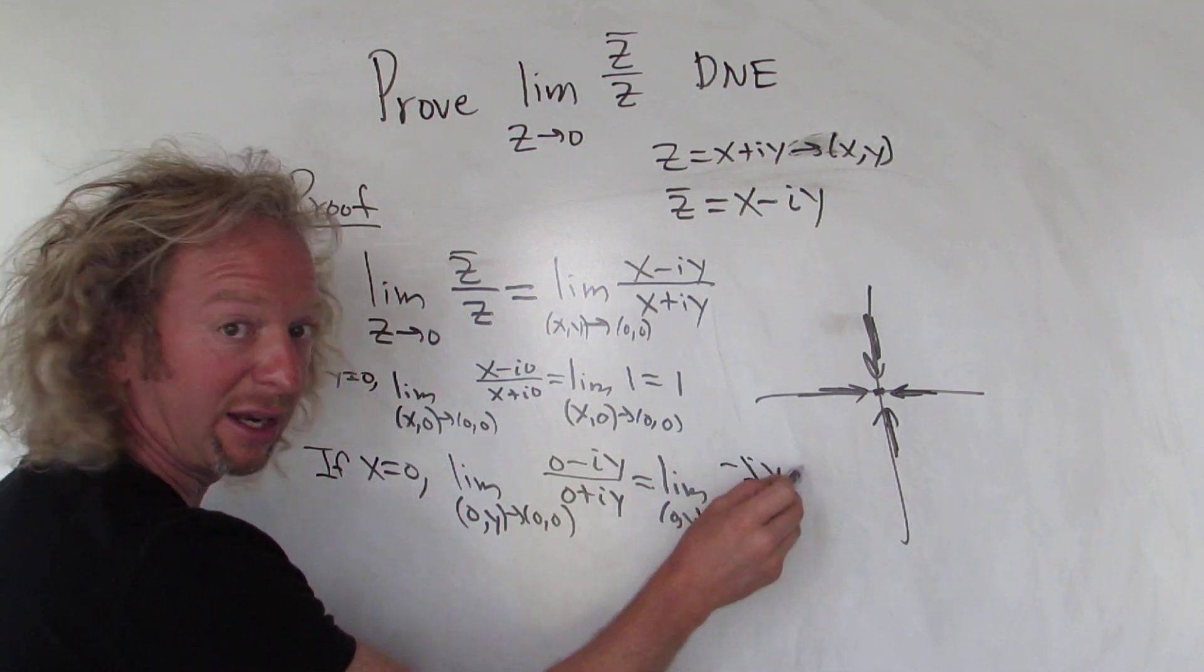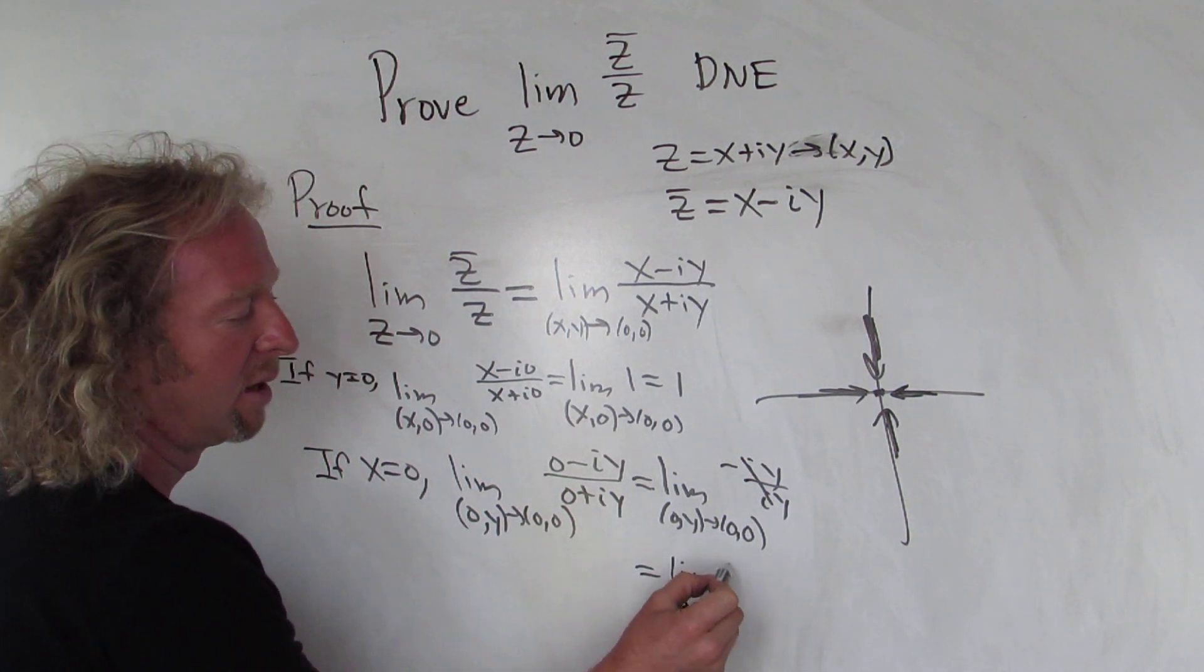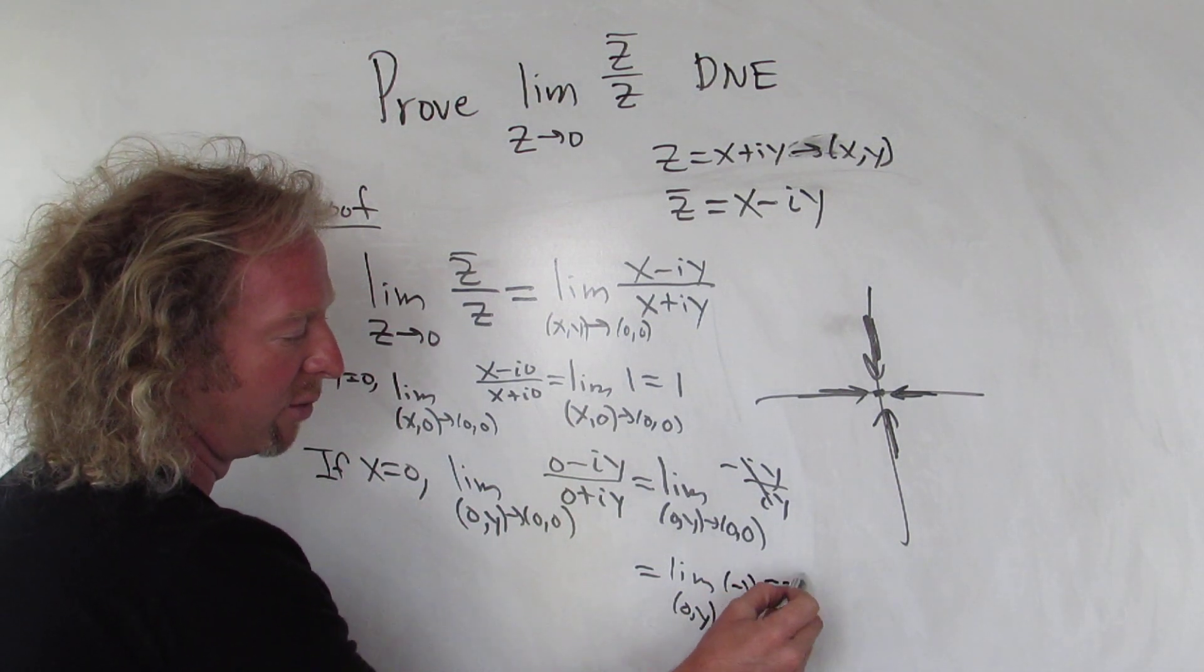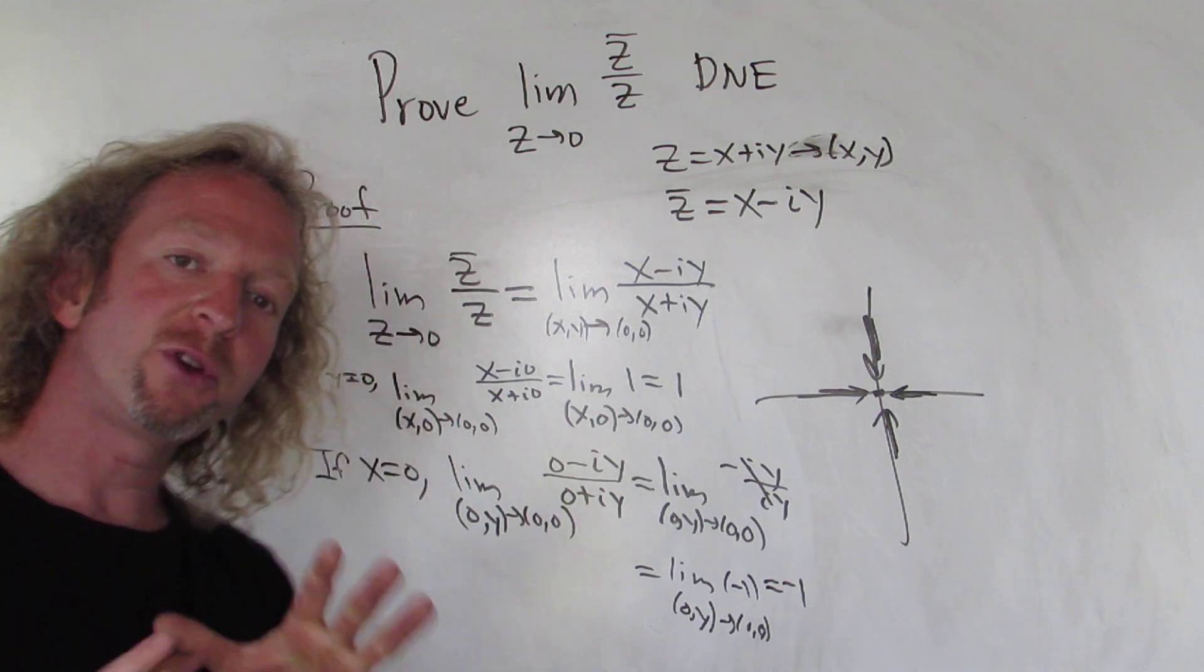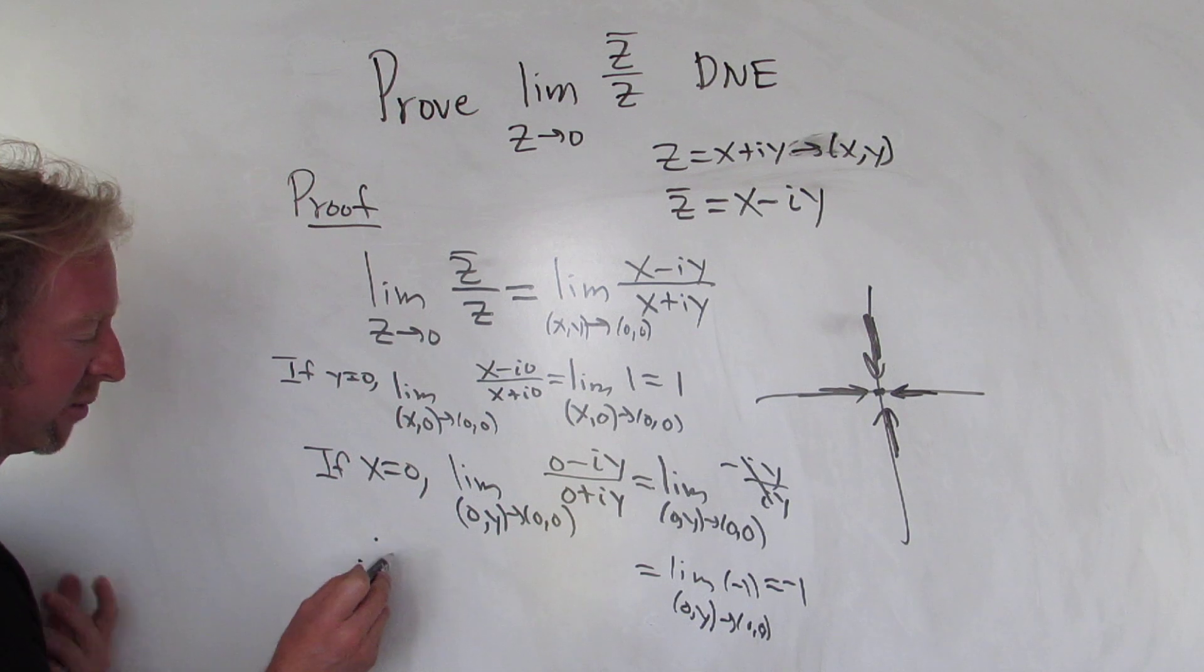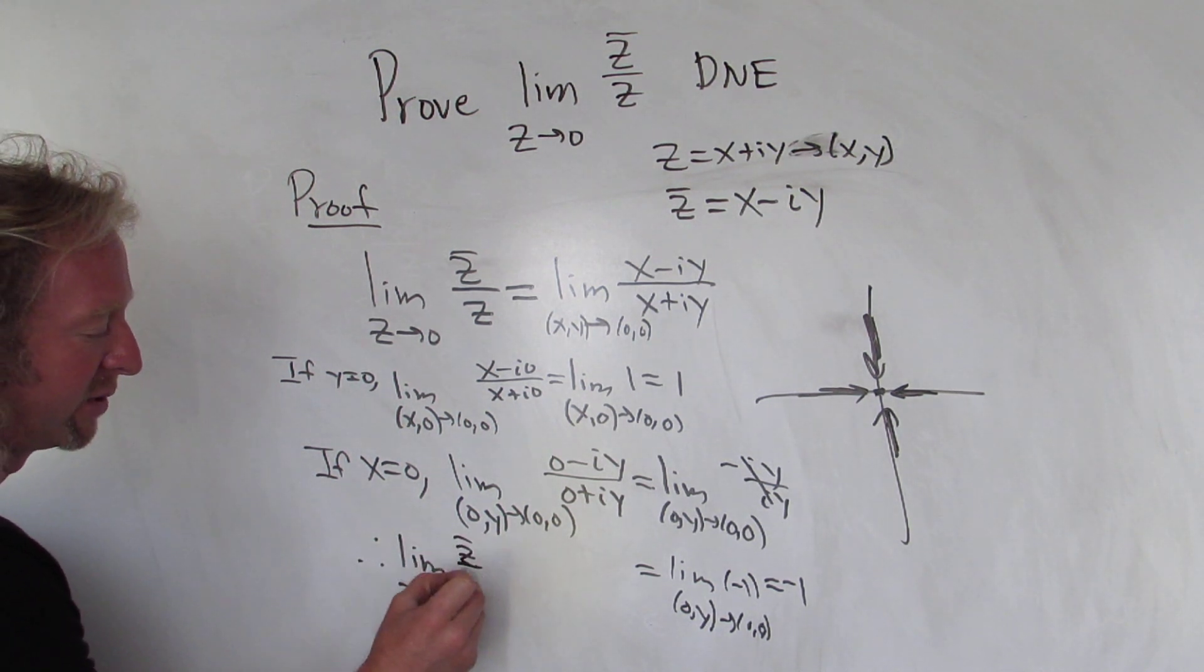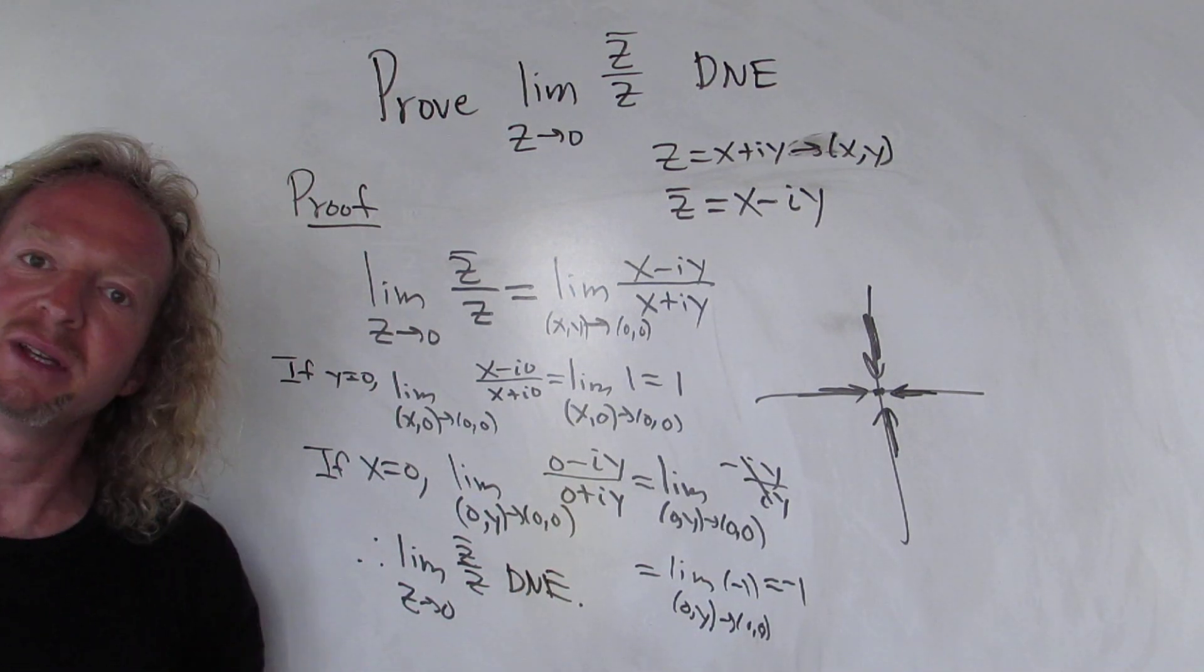So we get negative one. The limit as (0,y) approaches (0,0) is negative one. So if we approach along the real axis we get one, if we approach along the imaginary axis we get negative one. Therefore the limit does not exist. So the limit as z approaches zero of z-bar over z does not exist. Hope that made sense.